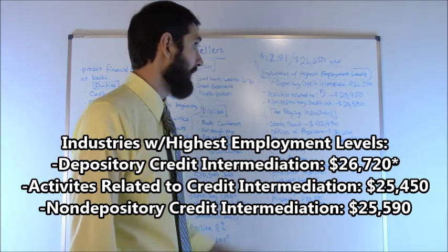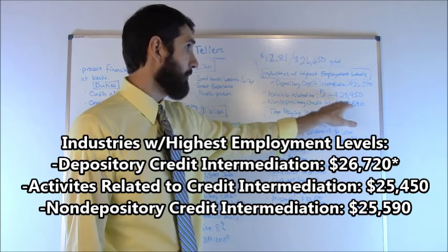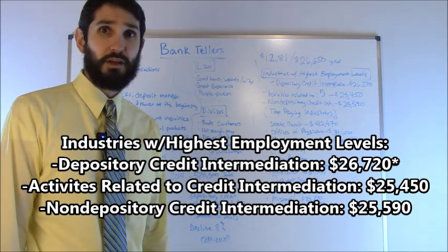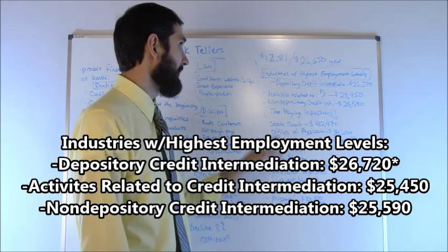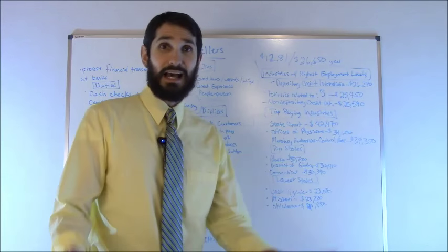Activities related to credit intermediation was the second industry with the highest employment level $25,450 was the average salary there. And then non-depository credit intermediation number three $25,590.